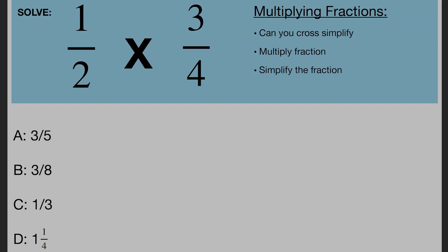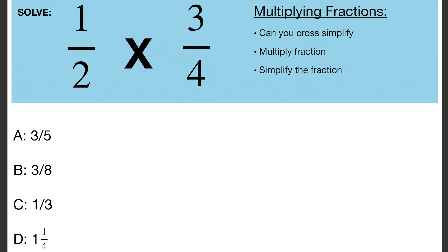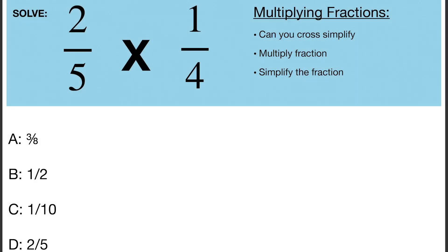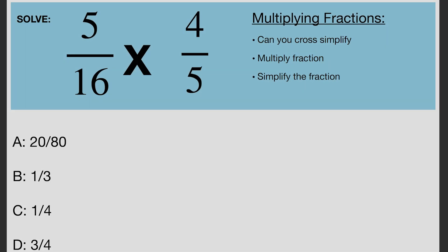That concludes the addition and subtraction fractions portion of the test. Next, we're going to be diving into multiplying fractions. 1 over 2 times 3 over 4. 2 over 5 times 1 over 4. 5 over 16 times 4 over 5.